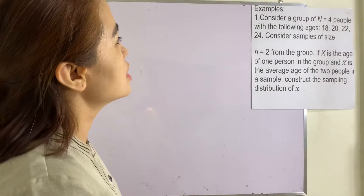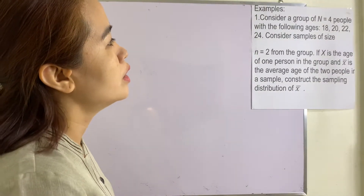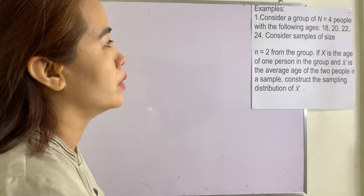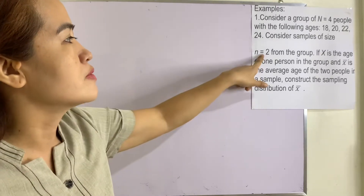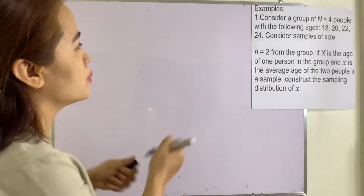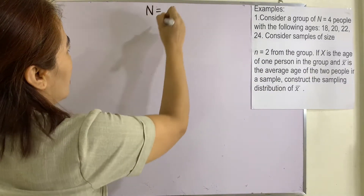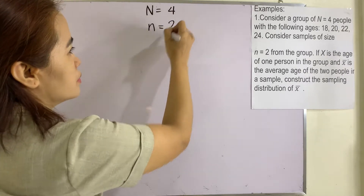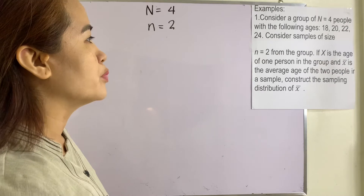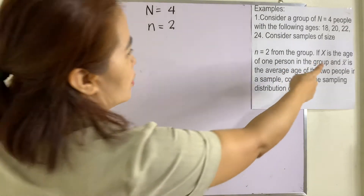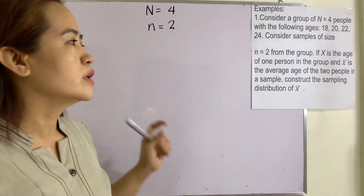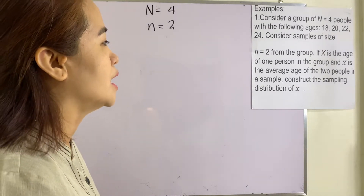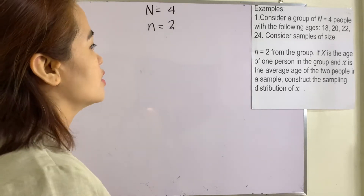Example 1: Consider a group of N equals 4 people with the following ages: 18, 20, 22, and 24. Consider samples of size n equals 2 from the group. X-bar, or the sample mean, is the average age of the 2 people in a sample. Construct the sampling distribution.